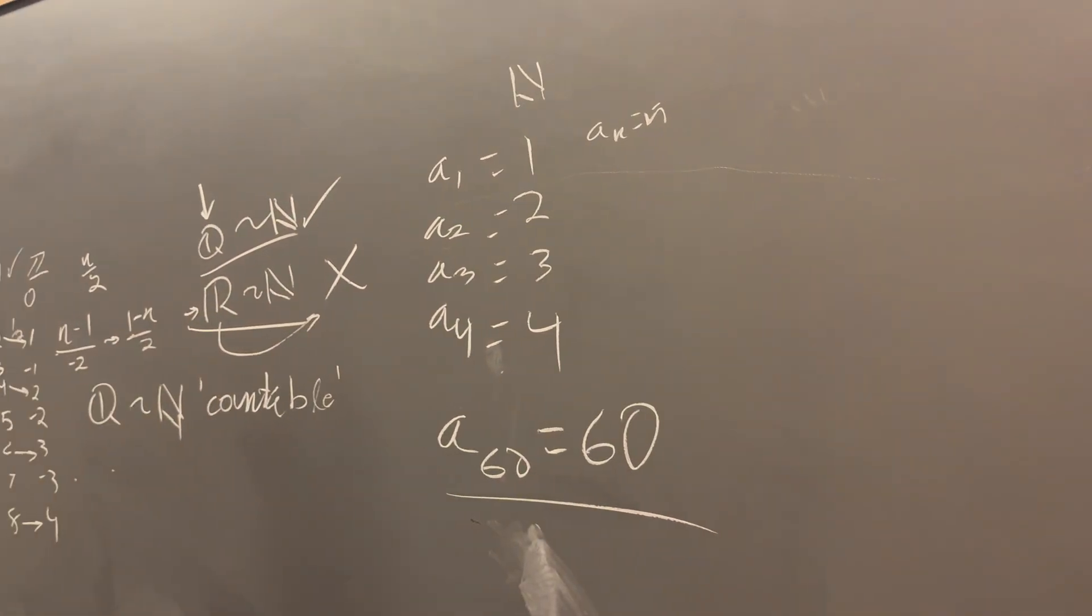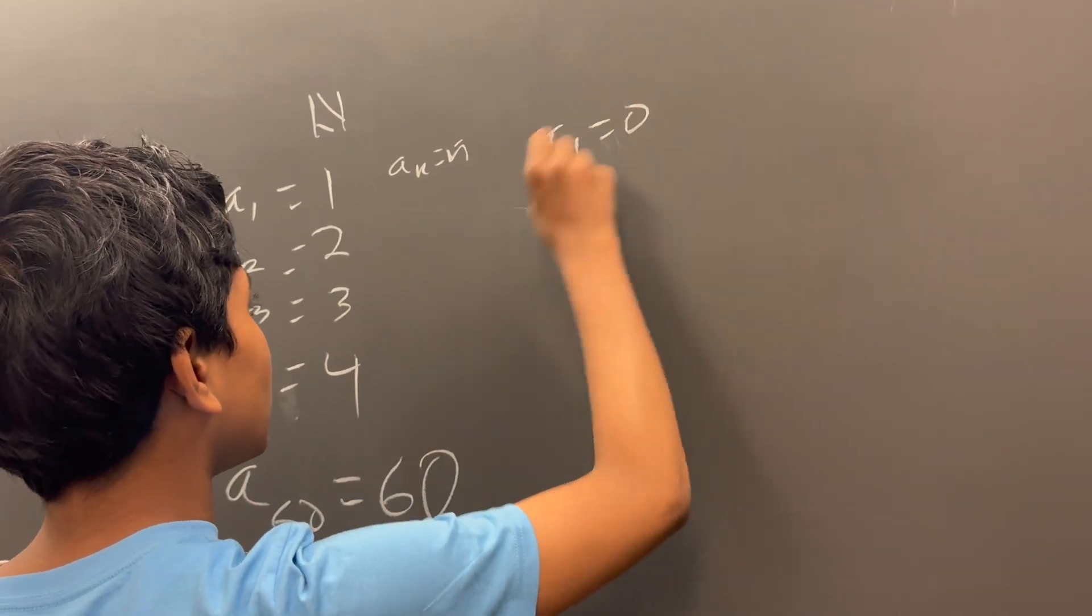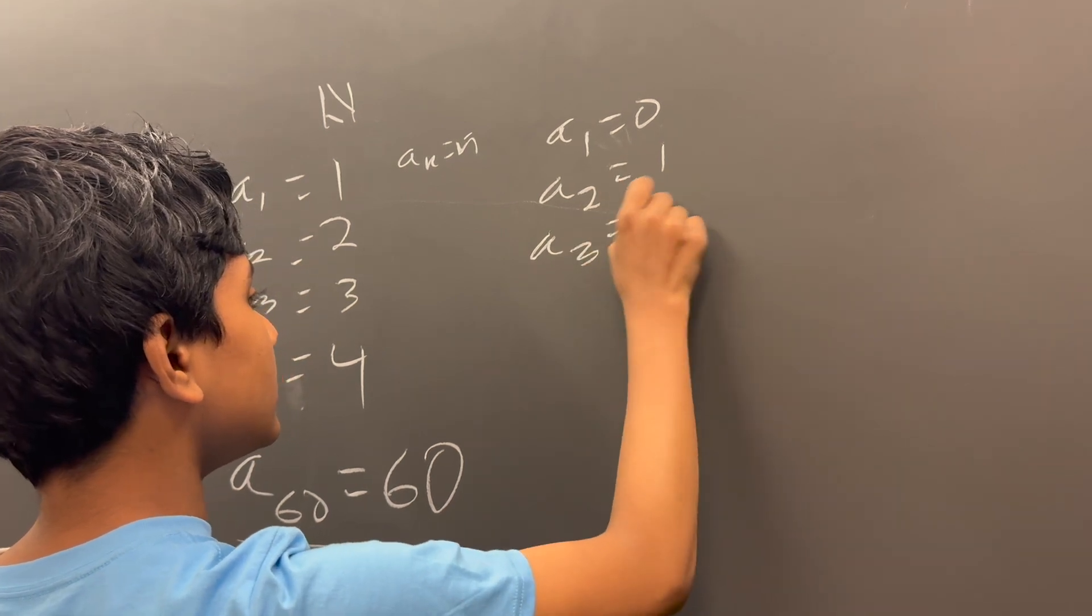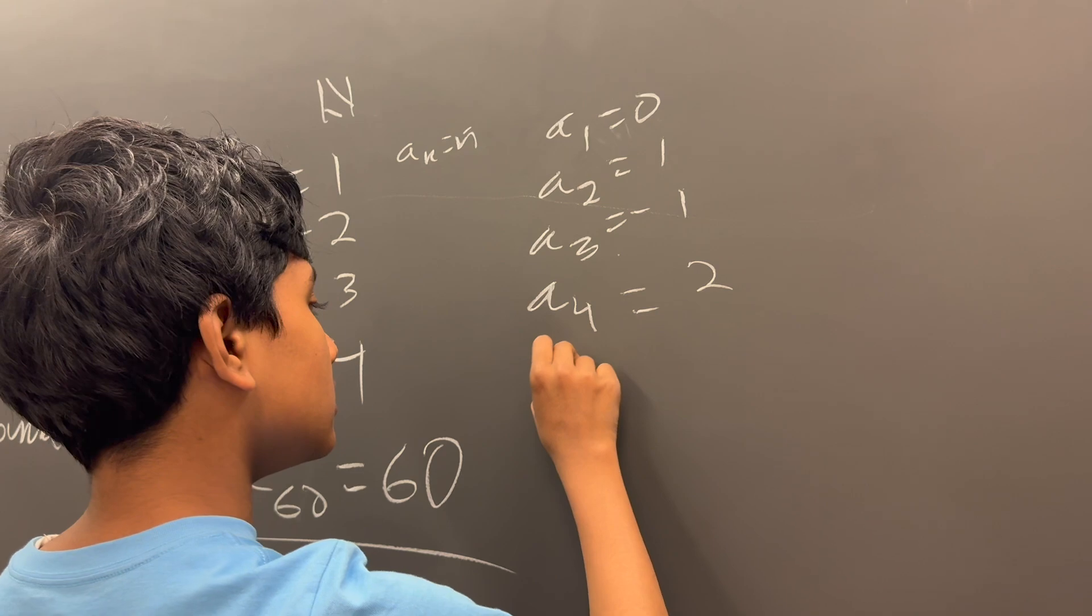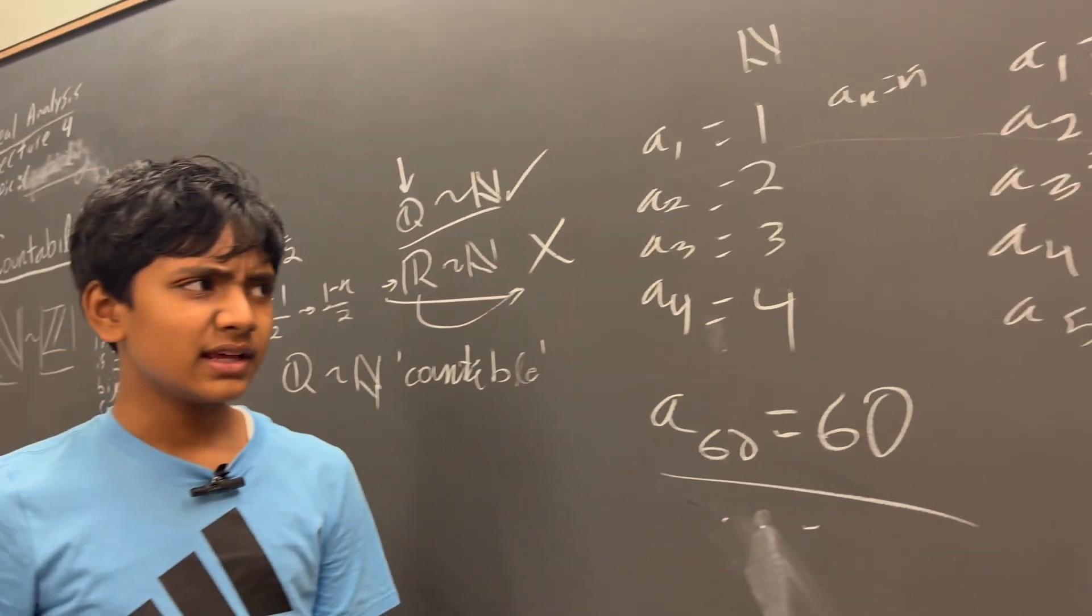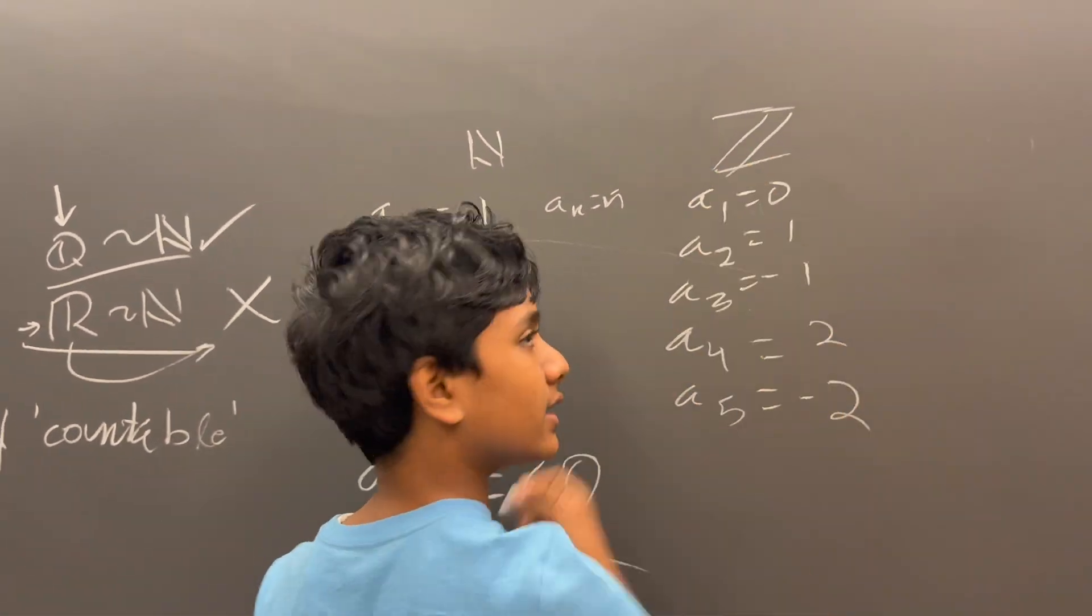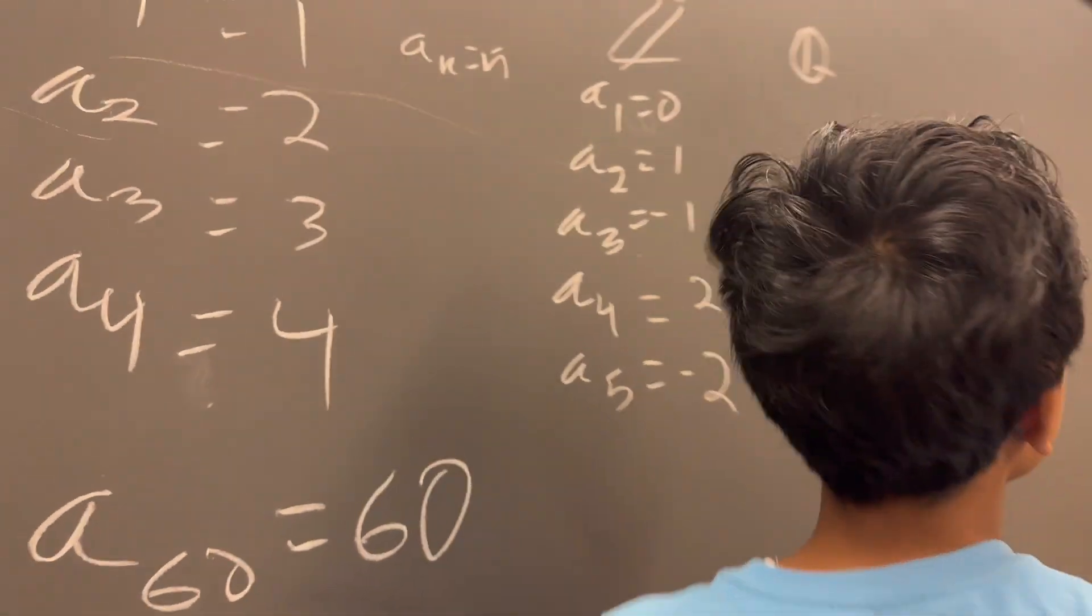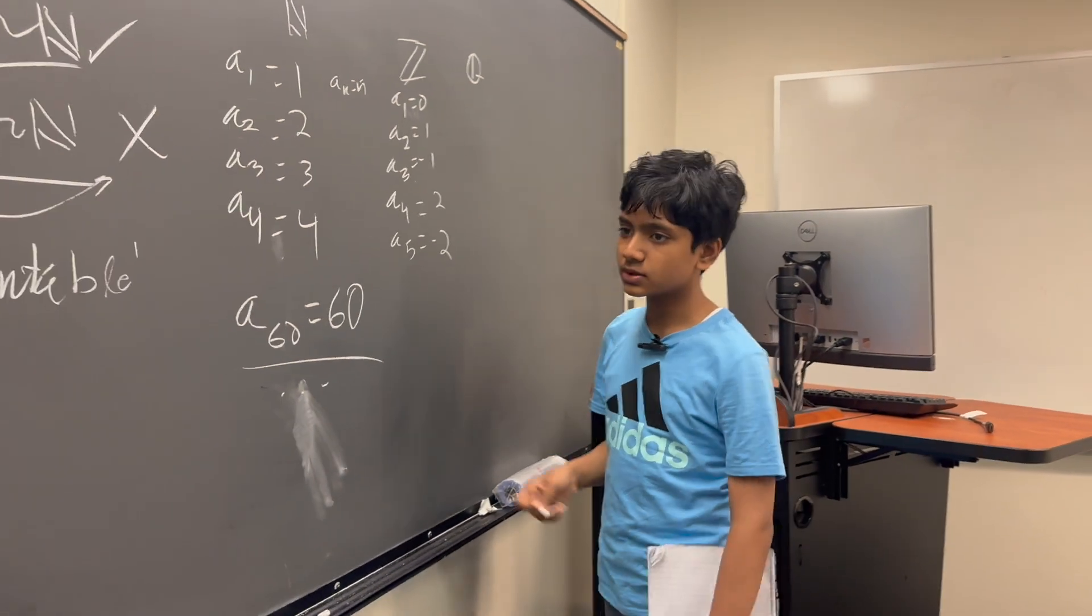Similarly, we can enumerate this for the integers in the same way. a1 is 0, a2 is 1, a3 is minus 1. This determines how we can make a relation. Now, you might be thinking, how do we enumerate the rationals? Because they're no next rational number. We can't order them in terms of size, right?